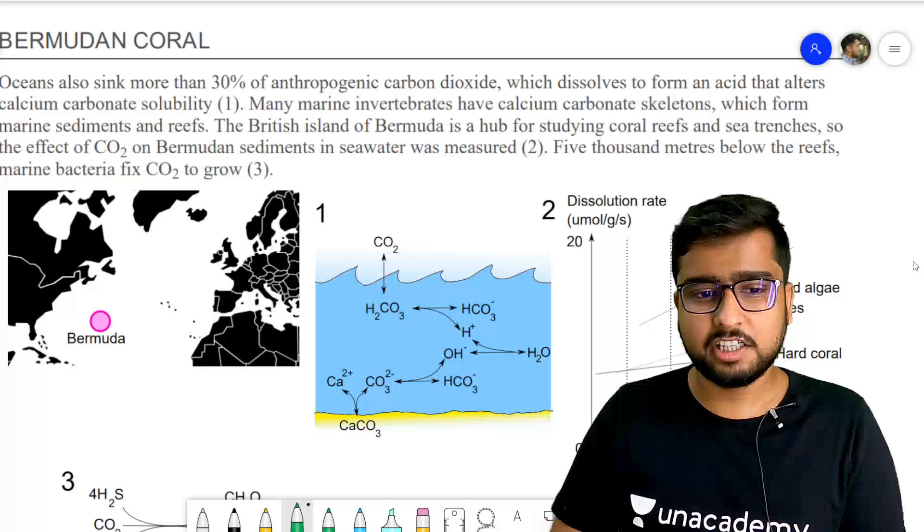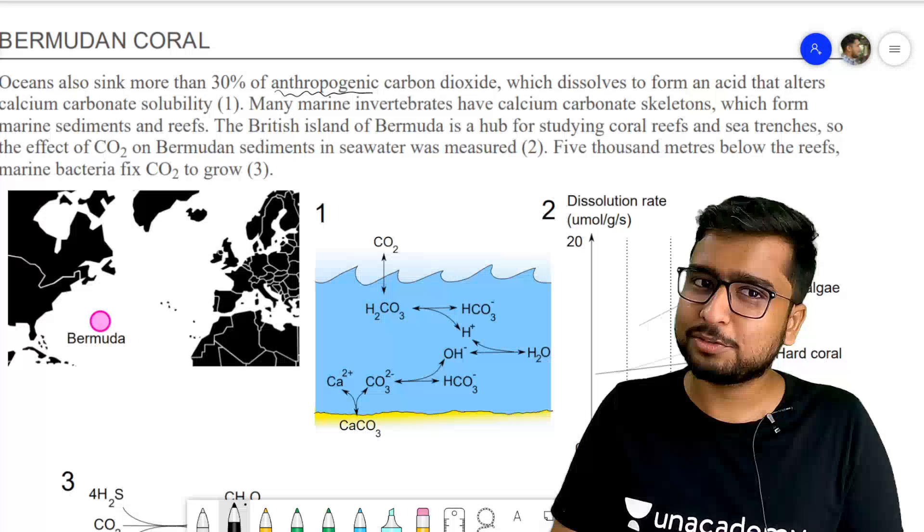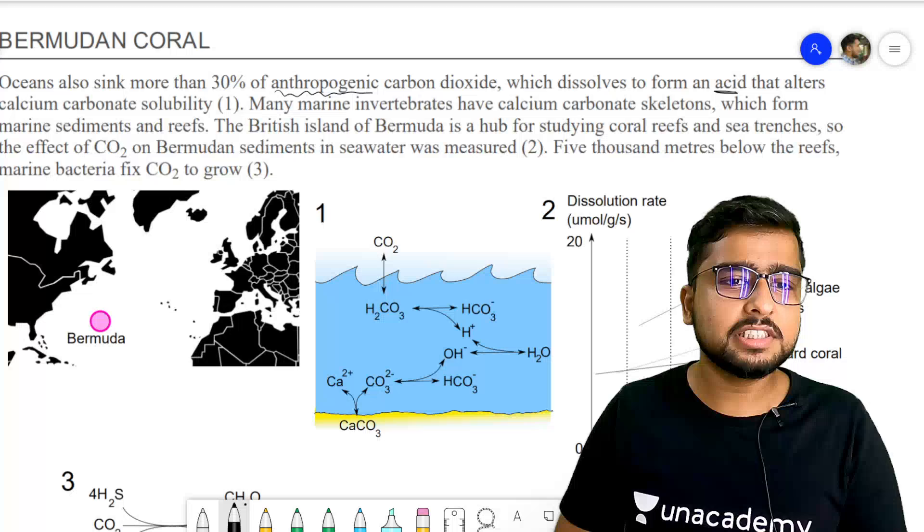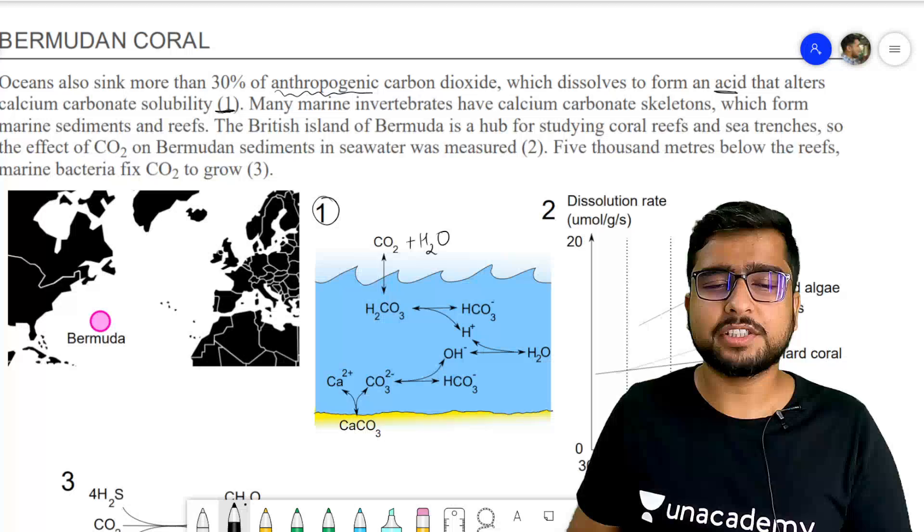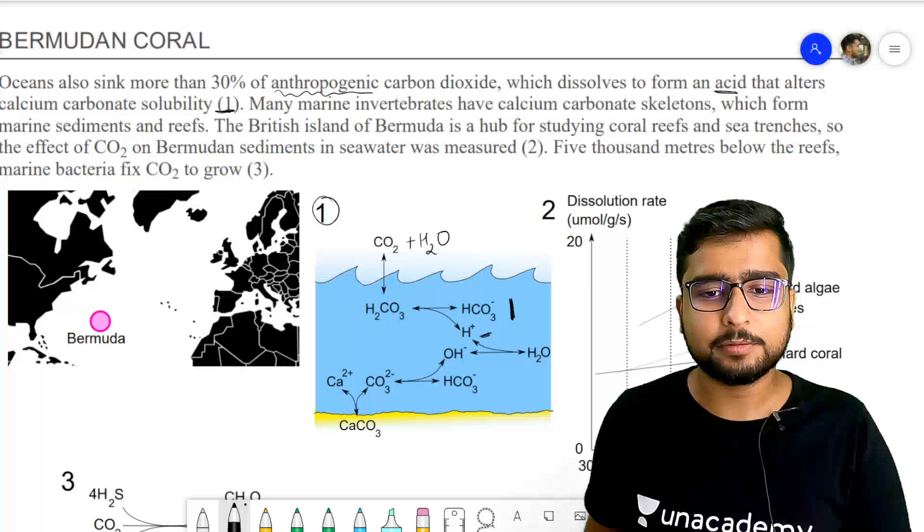Oceans sink more than 30% of anthropogenic carbon dioxide. I hope by now you understand that anthropogenic means manmade. Man does not make CO2, he just pulls it out of the fossil fuels. CO2 which dissolves to form an acid that alters the calcium carbonate solubility. And this thing they have shown in diagram number one. CO2 just goes in water. So CO2 plus H2O gives H2CO3. H2CO3 split karta hai. Aap dekh rahe ho.